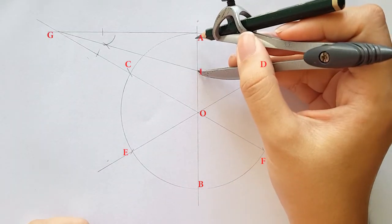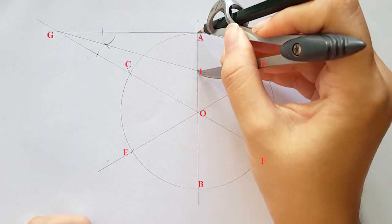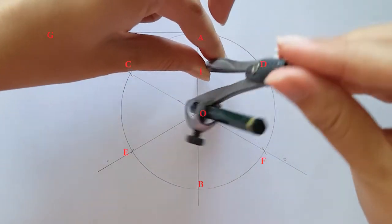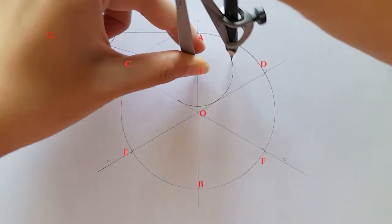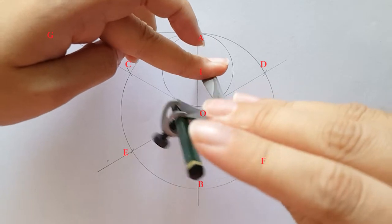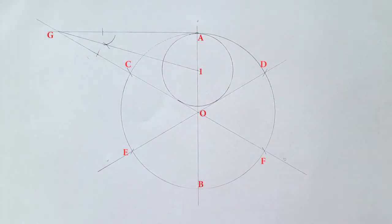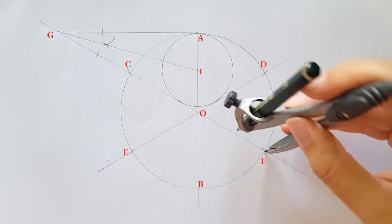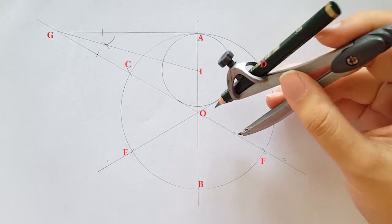Place your compass on point 1 and adjust to point A. Then, draw a circle. Since we found the radius length of inscribed circle, just duplicate length by placing your compass on point F to mark a point.